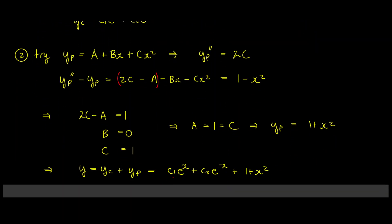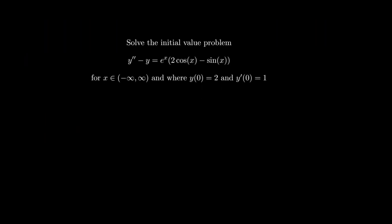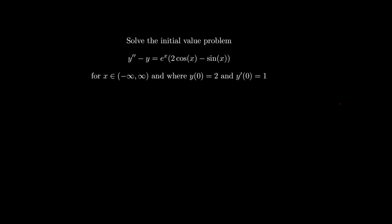Now let's apply the same technique to a more difficult example: an initial value problem. We have a non-homogeneous linear ODE with constant coefficients. Since the left-hand side is the same as before, the complementary function is again yc = c1·e^x + c2·e^{-x}.